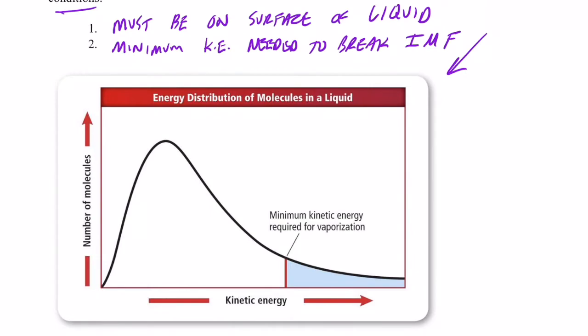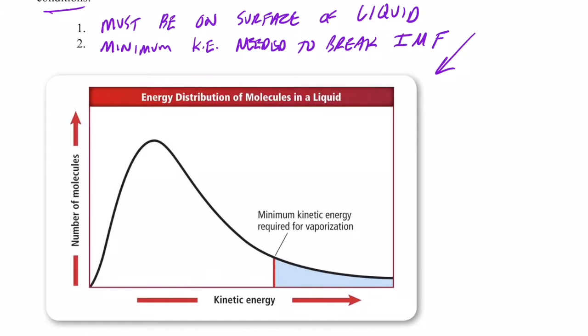We're back. We were talking about phase changes in our previous video, and the phase change we were talking about at the very end was evaporation. We said there are two criteria that must be met in order for a molecule to evaporate. The first is it has to be on the surface of the liquid, and second, it has to have enough kinetic energy to break the intermolecular forces of attraction between the neighboring molecules.